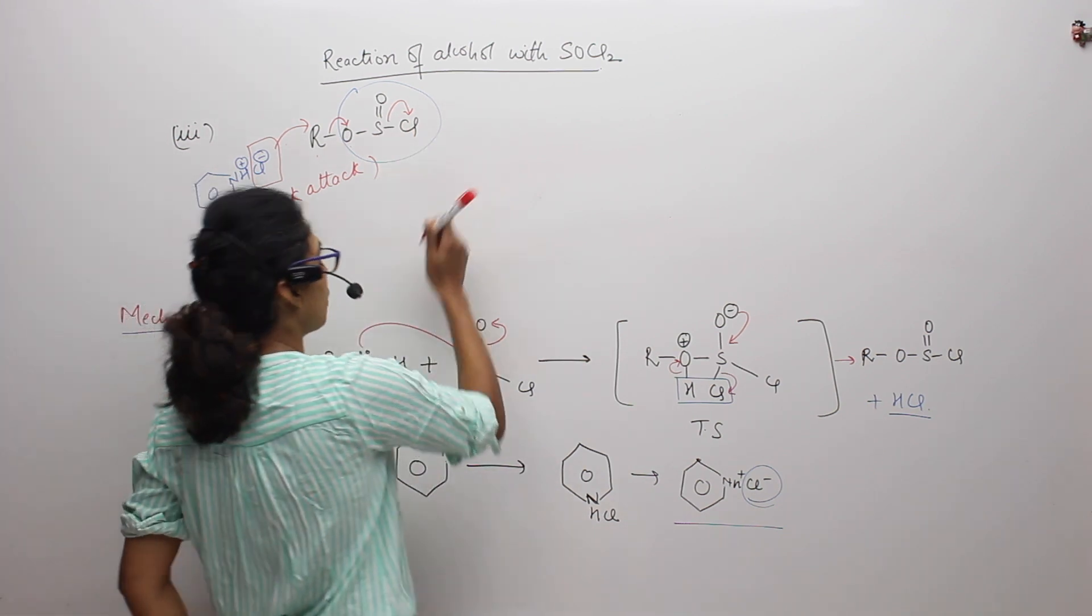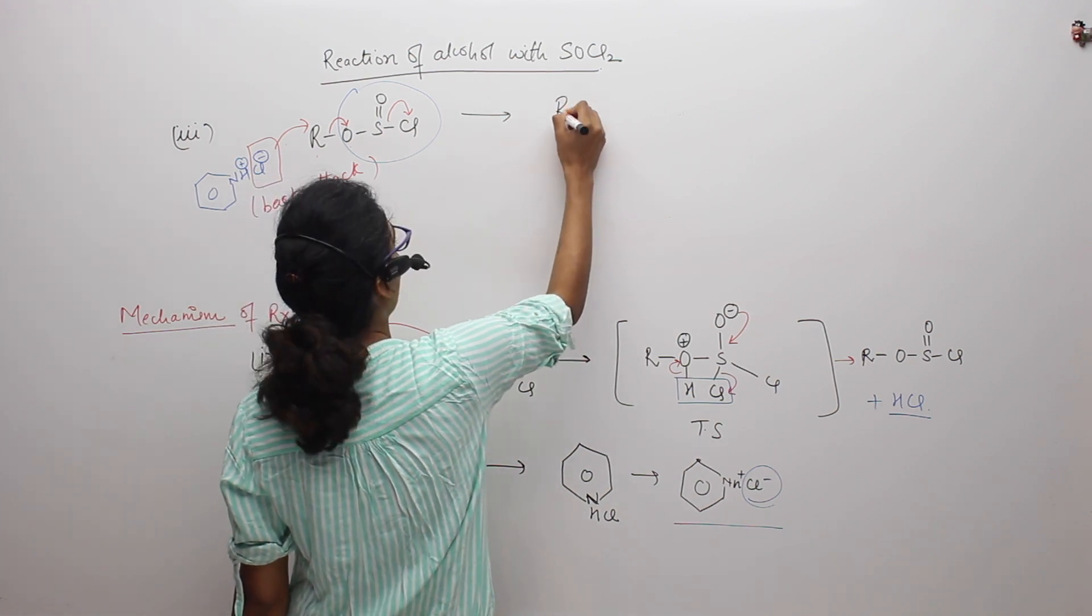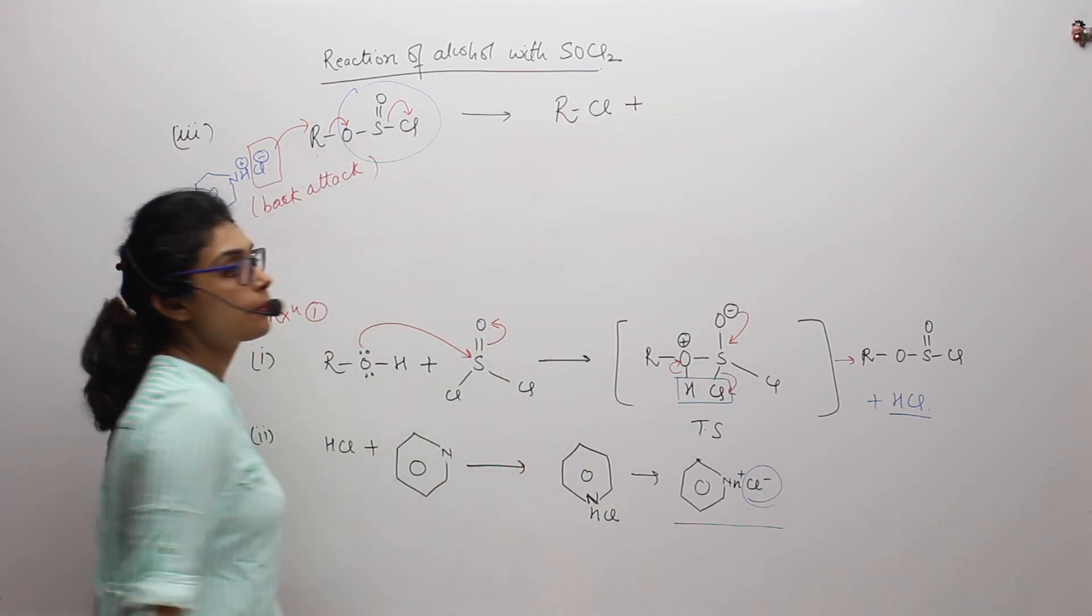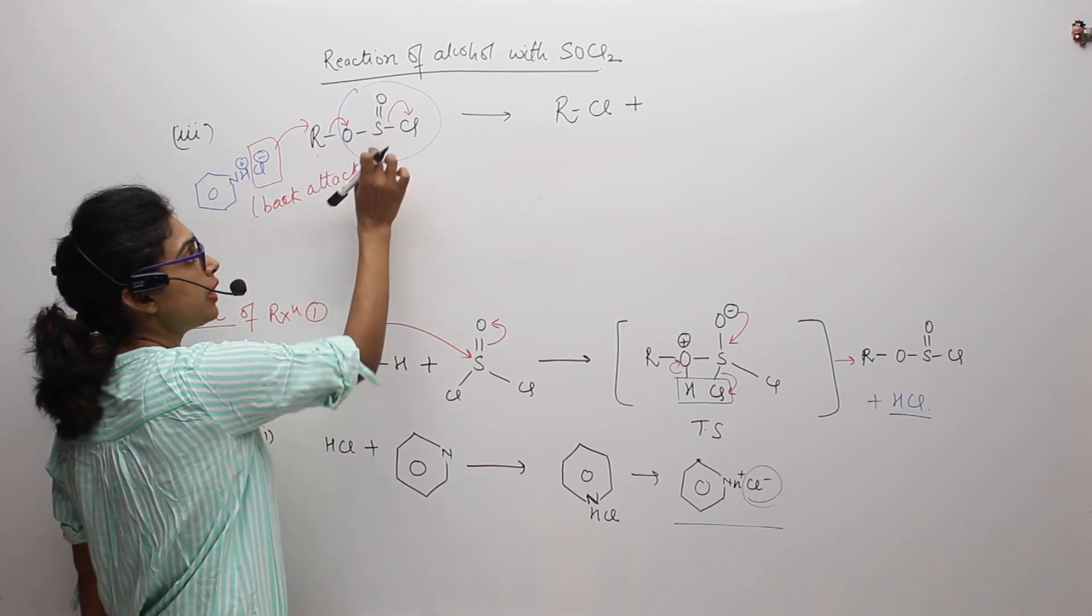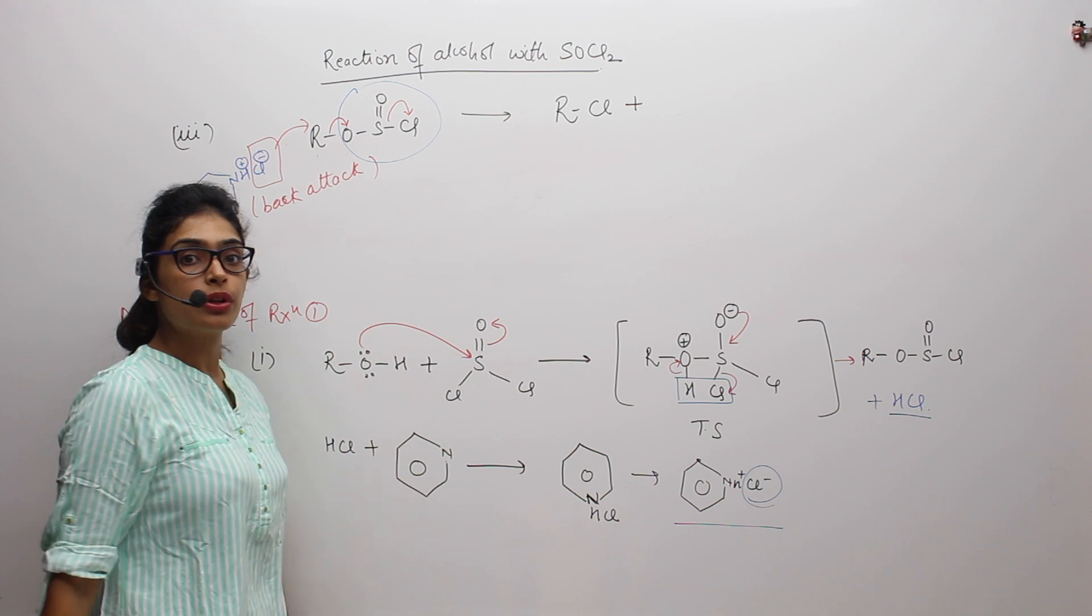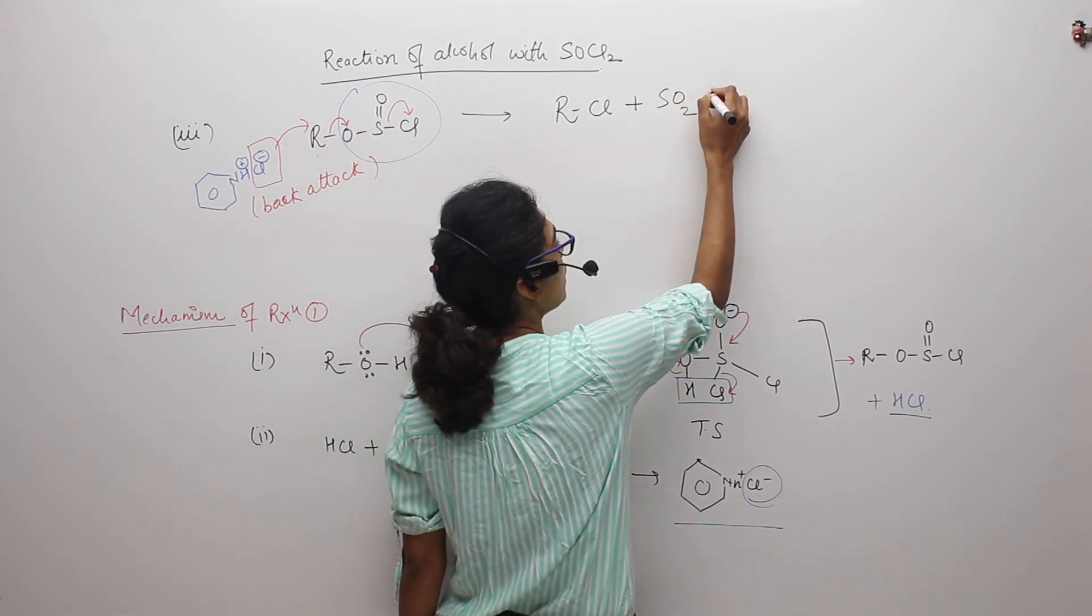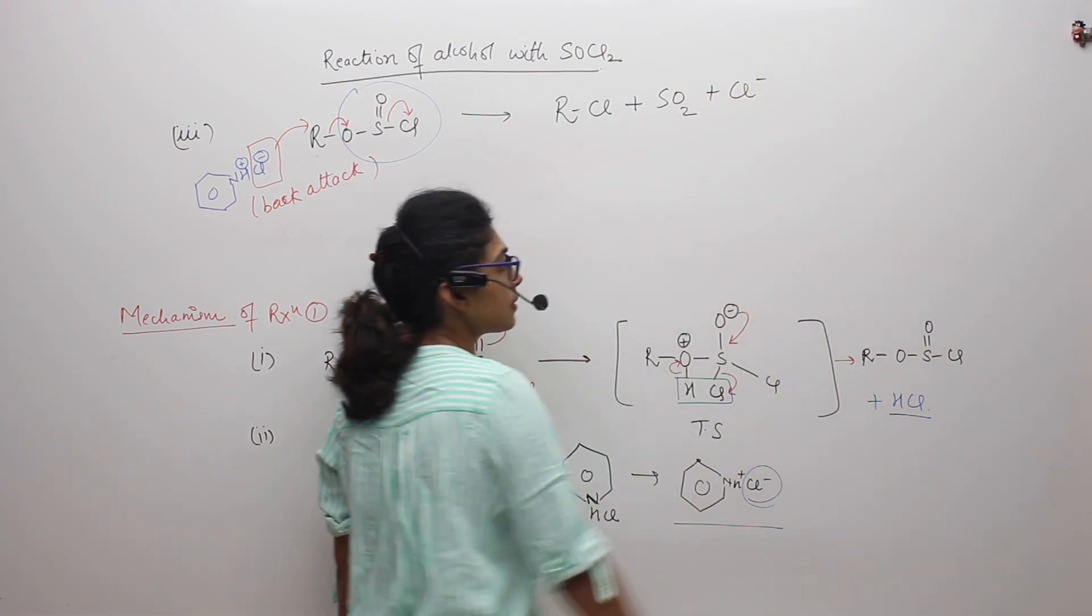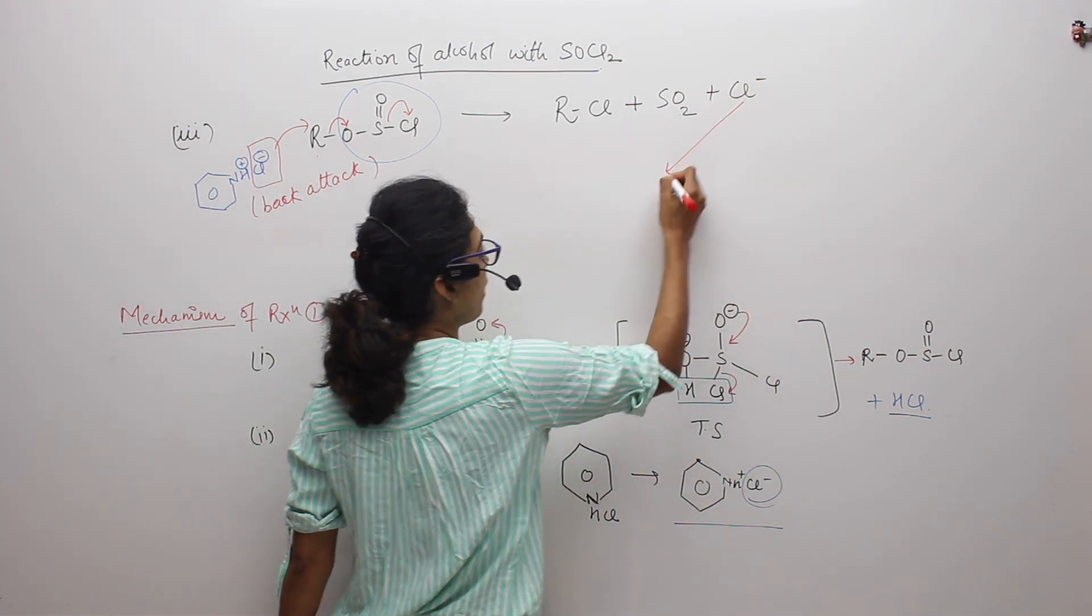So what we will get as a product? In product, we will get RCl plus, oxygen and sulfur has made a bond and sulfur has already broken its bond with chlorine, so we will get SO2 plus Cl minus. This Cl minus will again go back to pyridine.